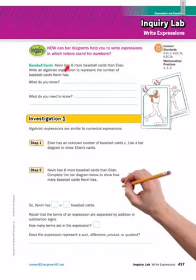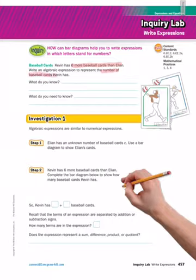Let's start with this problem at the top. It says Kevin has six more baseball cards than Elian — he has six more than Elian. Write an algebraic expression to represent the number of baseball cards Kevin has. We're going to start by writing down what we know and what we don't know, and this is important when you're writing expressions.